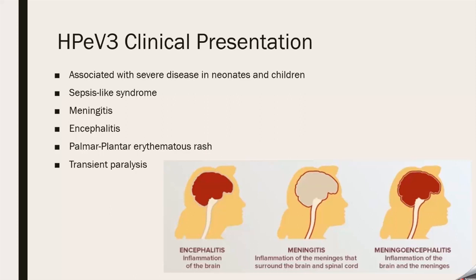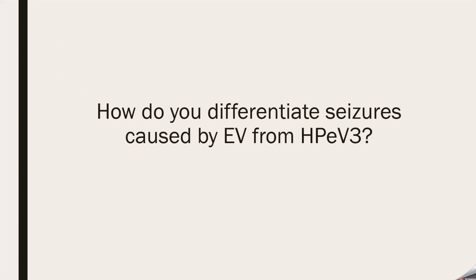The picture below shows which brain areas are affected by inflammation. Regarding differentiating seizures caused by echovirus versus parechovirus — you can't. You cannot differentiate the seizures clinically. Whether they present with tonic-clonic or focal seizure activity, this is not unique to a specific viral etiology. Temporally, they're both the same.